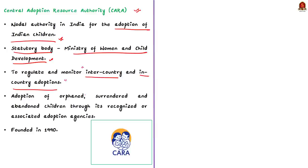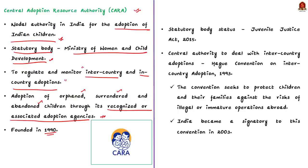The authority chiefly handles the adoption of orphaned, surrendered, and abandoned children through its recognized and associated adoption agencies. Note that CARA was founded in 1990 and was provided with the status of a statutory body under the Juvenile Justice Act 2015.